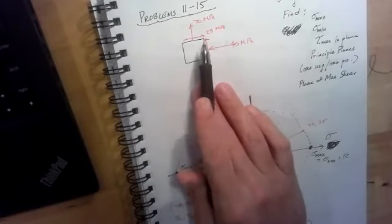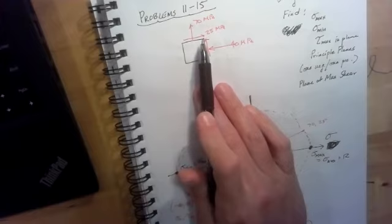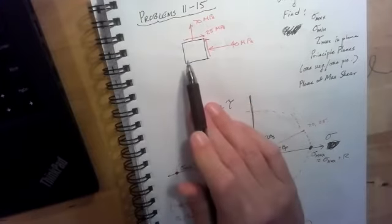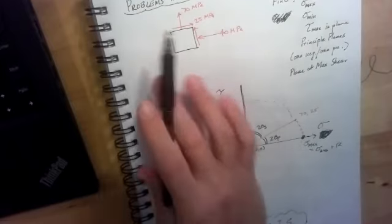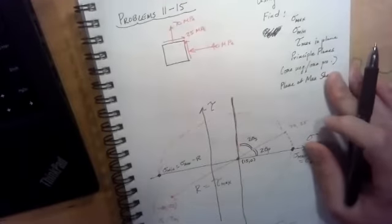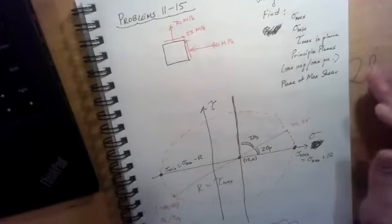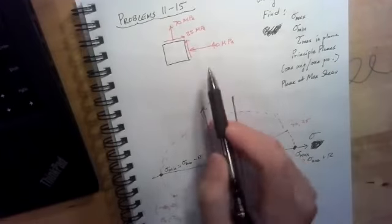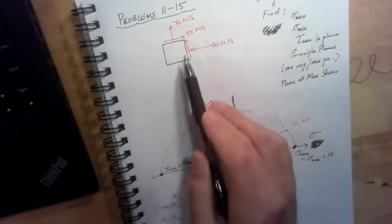Since my shear stresses point to the upper right hand corner and the lower left hand corner, when we consider everything that would be acting on the other side of the element, because this element has to be in equilibrium and things have to be equal and opposite. Although we don't draw them, they are implied by the necessity to keep the element in equilibrium.